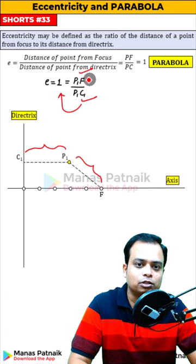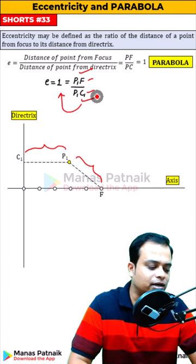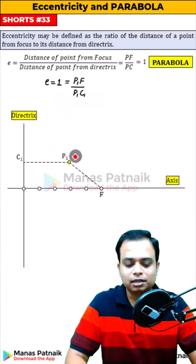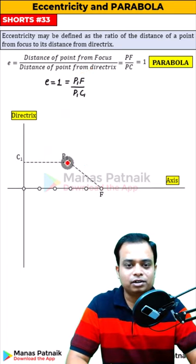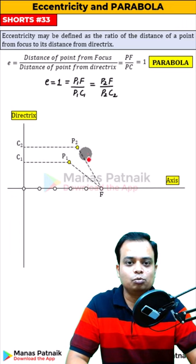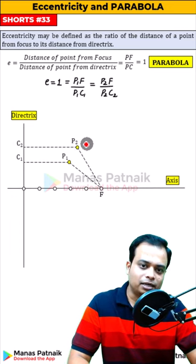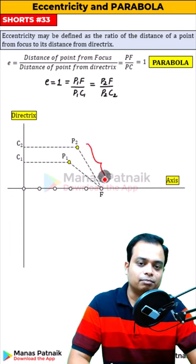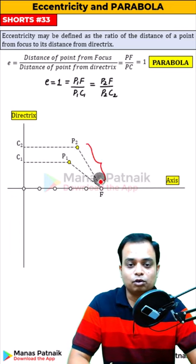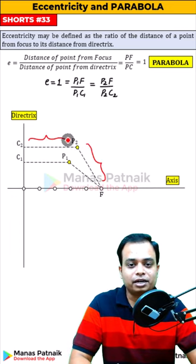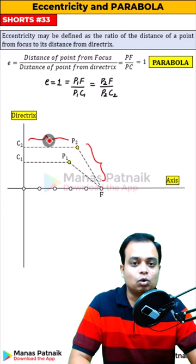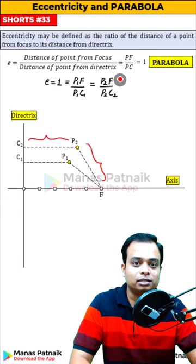The point will shift to a new position, but the rule is the same: distance from focus and distance from directrix — these two are equal. Since they are equal, the value again works out as 1.